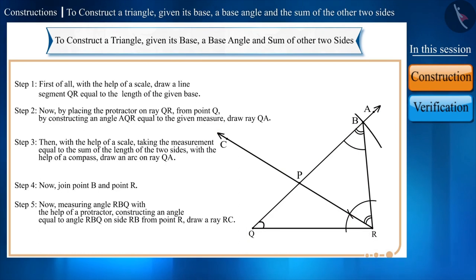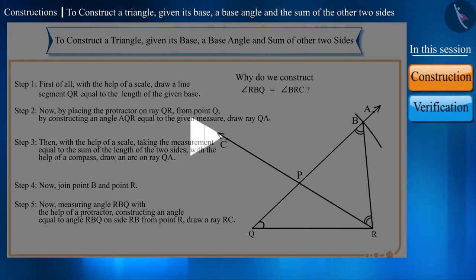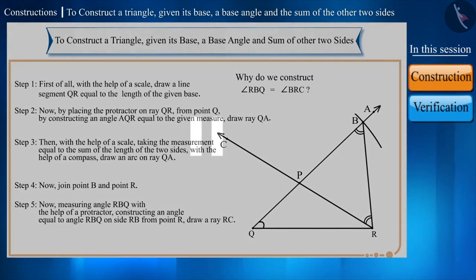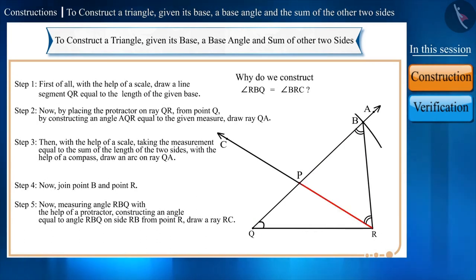Pause the video and think, why do we construct angle RBQ equal to angle BRC? We need side PR equal to side PB. Therefore, we construct the isosceles triangle for which two angles need to be equal. Hence, in the constructed figure, triangle PQR is the required triangle which we wanted to construct.